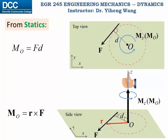Recalling from statics, the moment of a force is the rotational effect caused by the force about a reference point, or an axis passing through that point. In scalar form, the moment equals the magnitude of the force multiplied by the moment arm — the perpendicular distance from the reference point to the line of action of the force. In vector form, the moment is the cross product of a position vector and the force vector, where the position vector starts at the reference point and can end anywhere along the line of action.